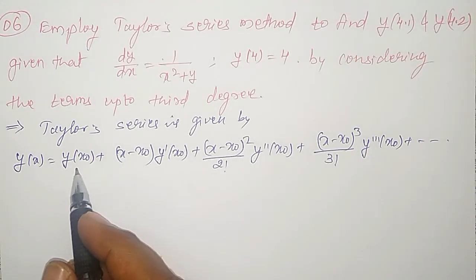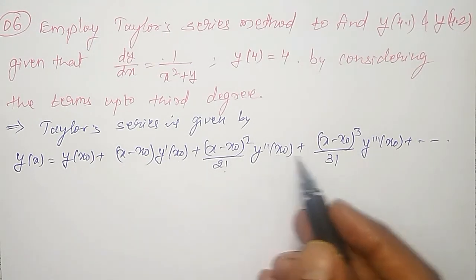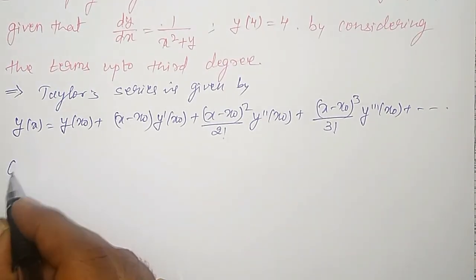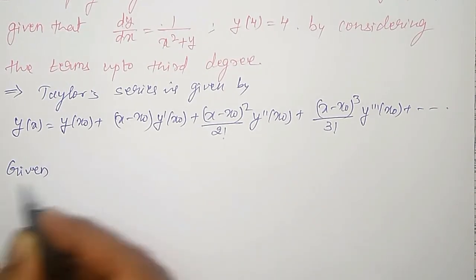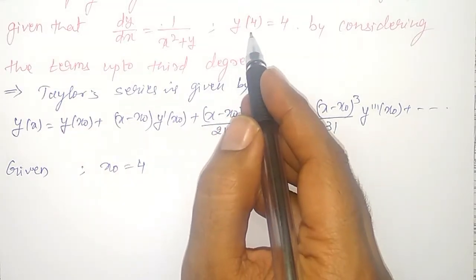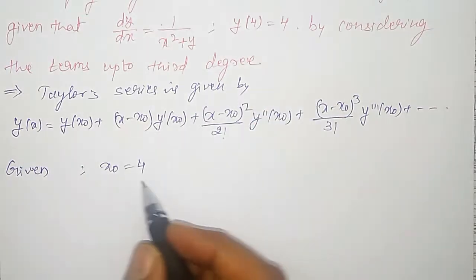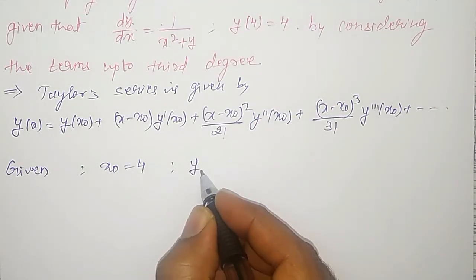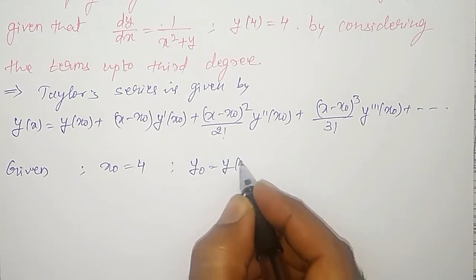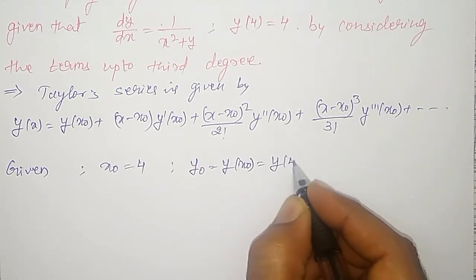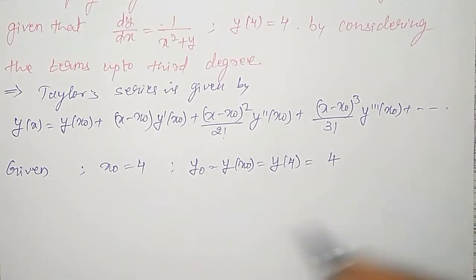Here I have to find out y(x₀), y'(x₀), y''(x₀), and y'''(x₀). Given: x₀ = 4, y(4) = 4. Therefore x₀ = 4 and y₀, that is y(x₀) = y(4) = 4.